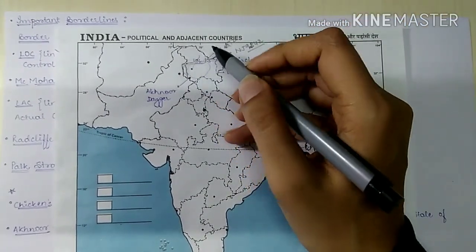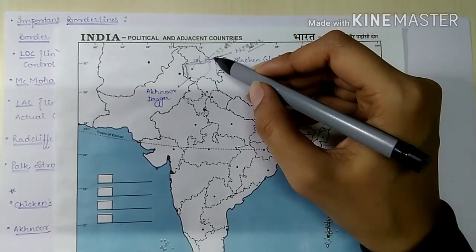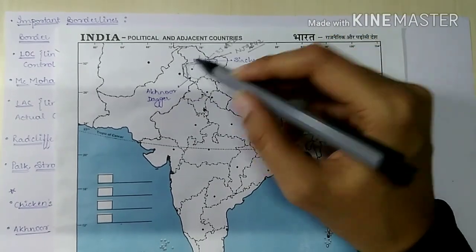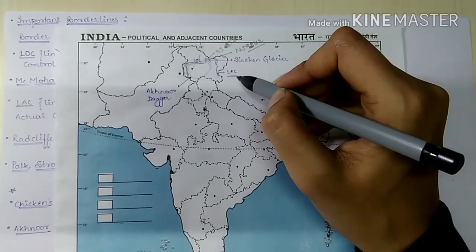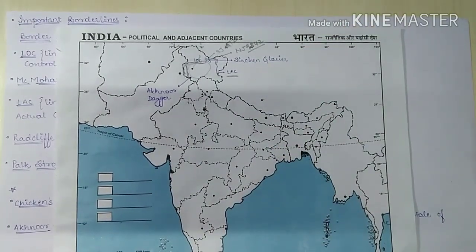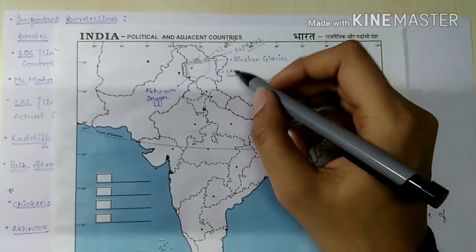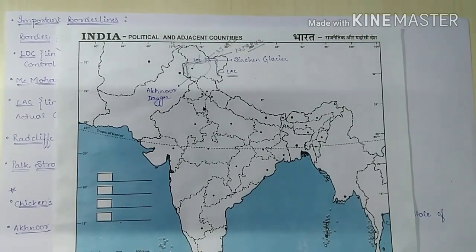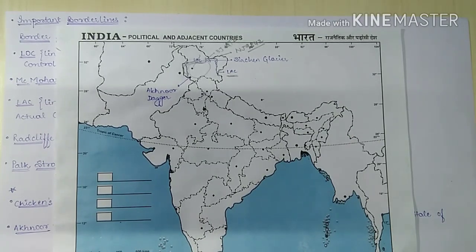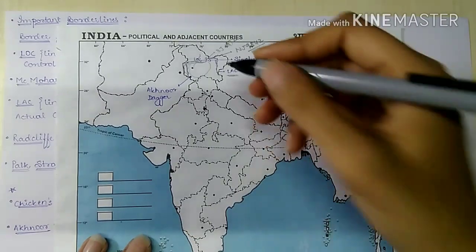The next ceasefire line between India and China is known as the LAC — Line of Actual Control. LOC is Line of Control; LAC is Line of Actual Control. It separates the Indian-controlled state of Jammu and Kashmir from the Chinese-controlled area known as Aksai Chin. This was an informal ceasefire line between India and China after the 1962 conflict. Until 1993 its existence was formally accepted in a bilateral agreement.